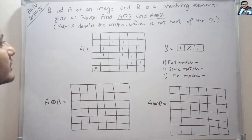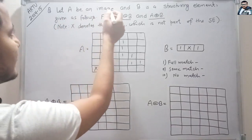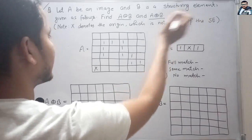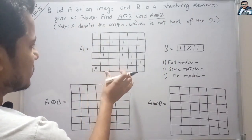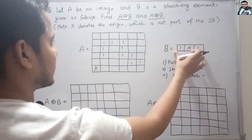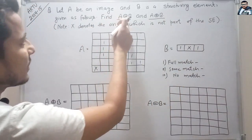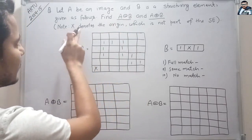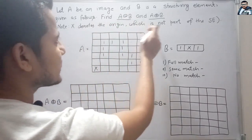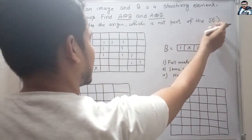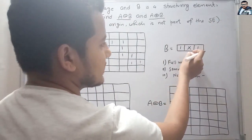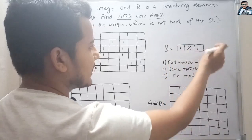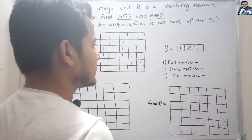Hi all, let's see this question. This was asked in GATE 2015. The question is: let A be an image and B be a structuring element given as follows. This is the image and this is the structuring element. Find erosion and dilation. Note: X denotes the origin, which is not part of the structuring element. So here this X is not part of the structuring element — this is the origin.